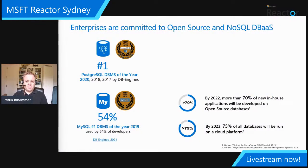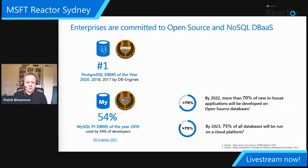Starting with the trends: there's no doubt that enterprises are embracing open source in general, certainly also when it comes to databases. Over the last decade there's been a big trend to look at not only traditional relational databases but also NoSQL databases. On the relational side, both Postgres and MySQL have become the top most popular databases among developers and DBAs, fighting it out for the DB Engines Database of the Year Award — Postgres has won three times, MySQL won in 2019.